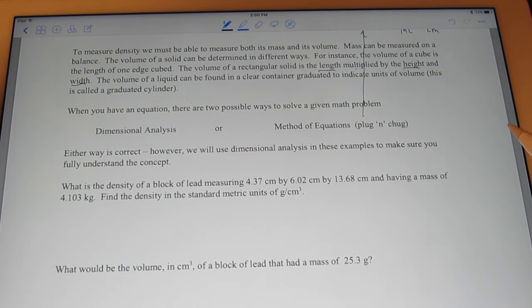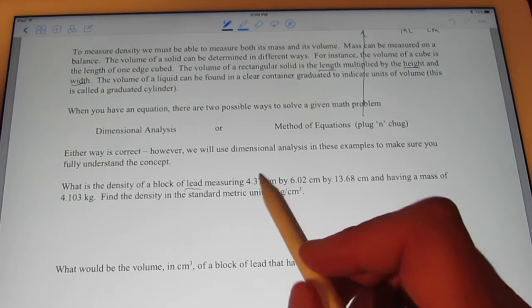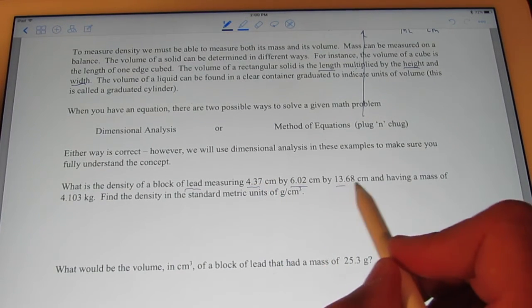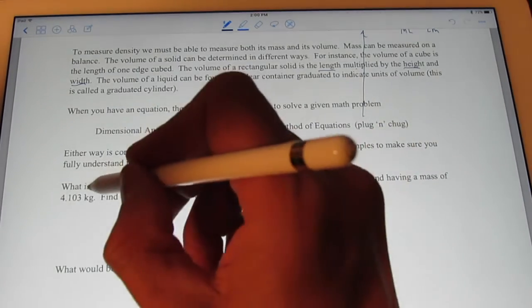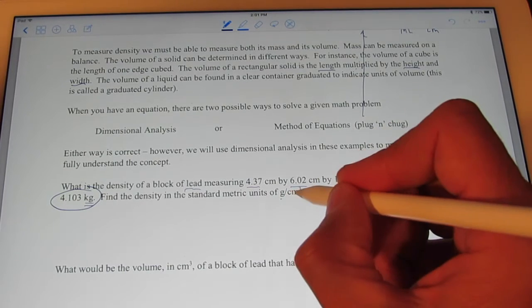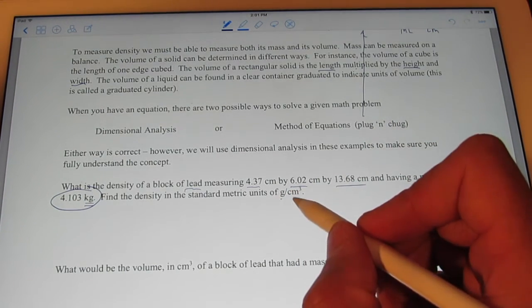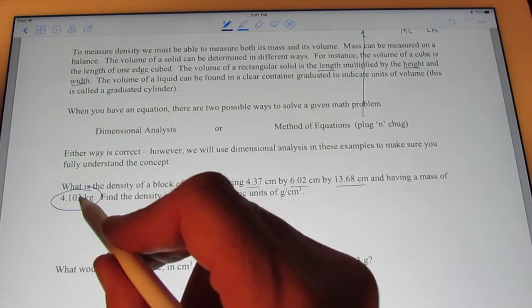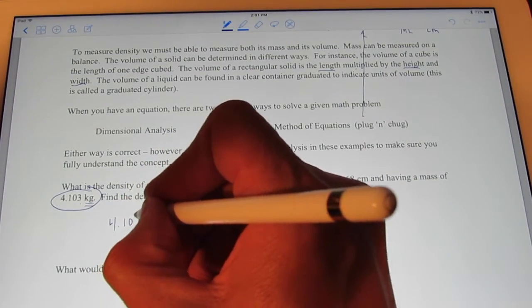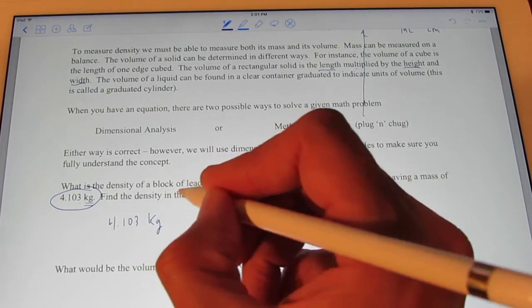So, let's start by finding the density of a block of lead. So, I'm going to give you, looks like the length, the width, and the height of this block. And it's mass, but the mass I'm giving in kilograms. Now, I want the density in grams per cubic centimeter. So, let's see how we're going to do that. We need to know grams, and I know kilograms. So, let's start with 4.103 kilograms.